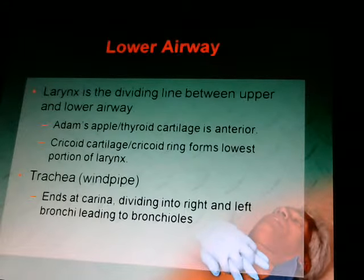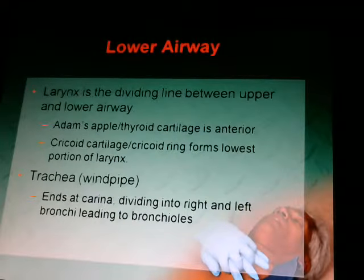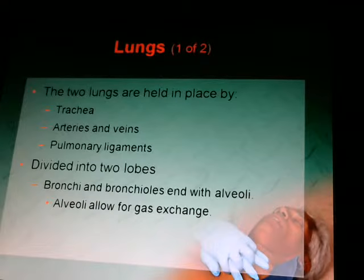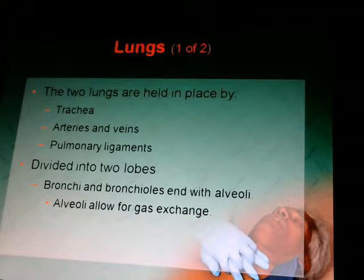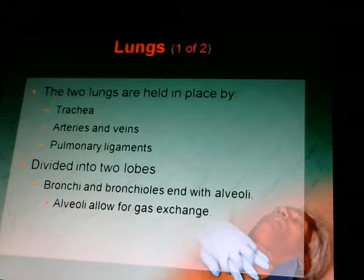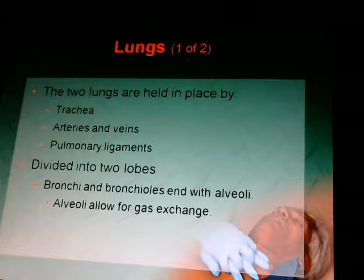The trachea is your windpipe. It ends at the carina, which divides into the right and left bronchi, leading to the bronchioles in your lungs. The two lungs are held in place by the trachea, your arteries, veins, and pulmonary ligaments. The bronchioles end with the alveoli, which allow for gas exchange. We'll talk more about this when we get into external and internal respiration.